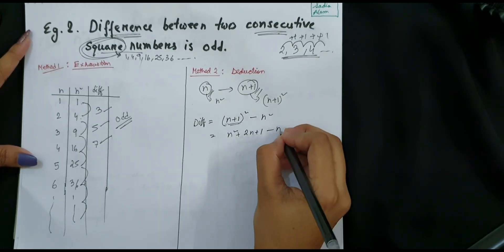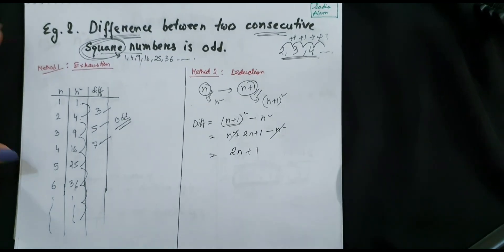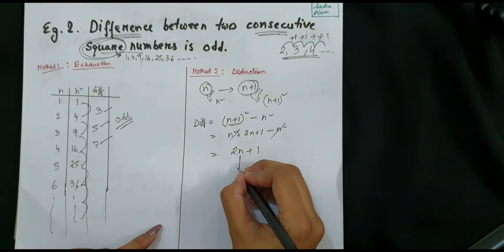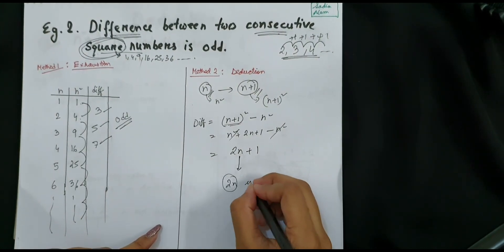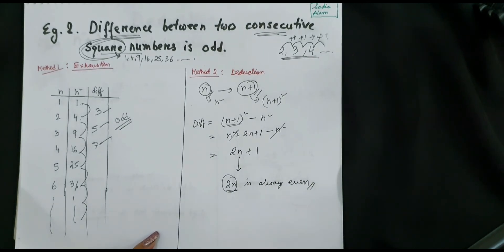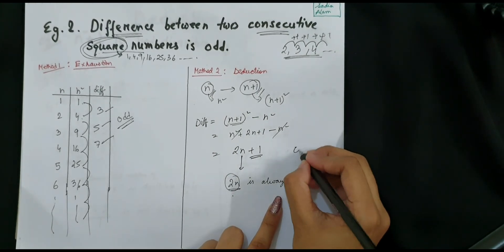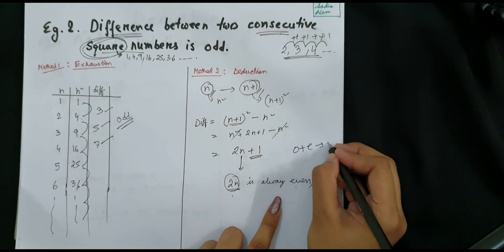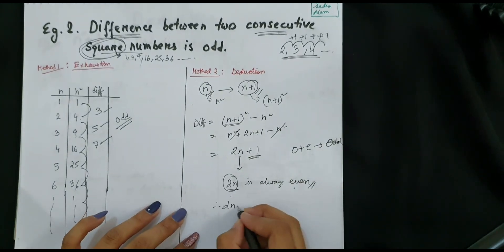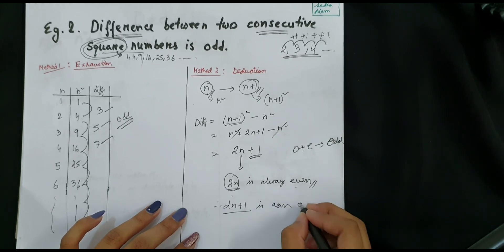As you can see, whatever the value of n is, 2n is always even since it is a multiple of 2. Adding plus 1 to an even number — that is, adding odd and even — will always result in an odd number. Therefore 2n plus 1 is always an odd number, which proves that the difference between two consecutive square numbers is odd.